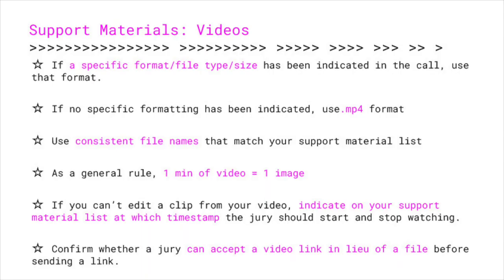Next, I'll talk about support materials in the context of videos. If a specific file format or file size has been indicated in the call, use that. If no specific formatting has been indicated, use MP4. Use consistent file names that match your support material list. As a general rule, one minute of video equals one image. If you can't edit a clip from your video, indicate on your support material list at which timestamp the jury should start and stop watching. Confirm whether a jury can accept a video link in lieu of a file before sending a link — Xspace actually requests links to these files in general, so you don't have to worry about that.